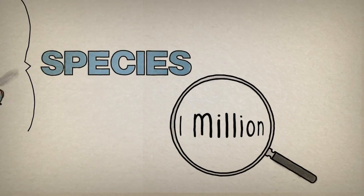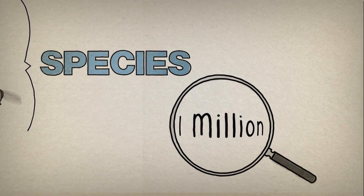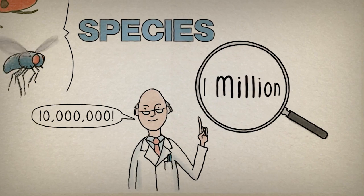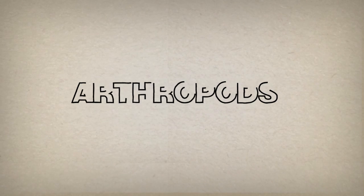We call these different types species, and around one million species of insect have been discovered so far, and scientists think there may be up to ten million species in total.